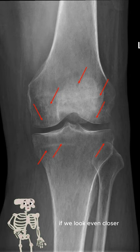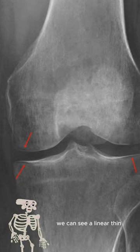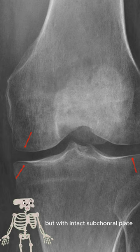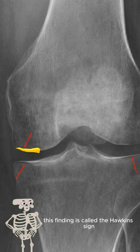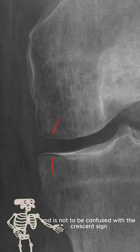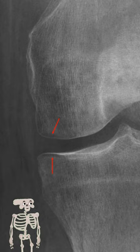If we look even closer, we can see a linear thin lucency at the subchondral bone, but with an intact subchondral plate. This finding is called the Hawking sign and is not to be confused with the crescent sign of avascular necrosis.